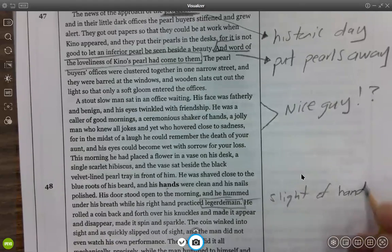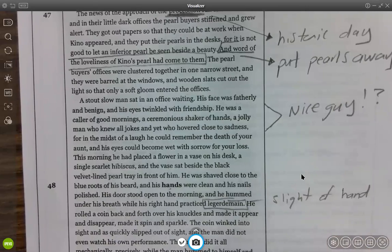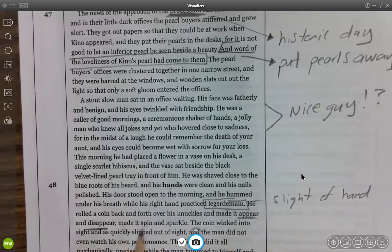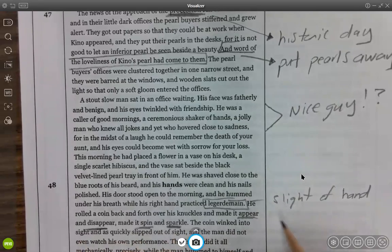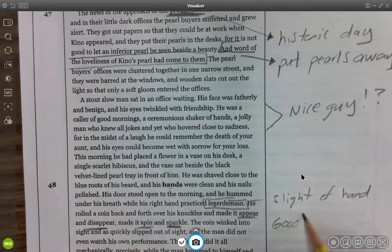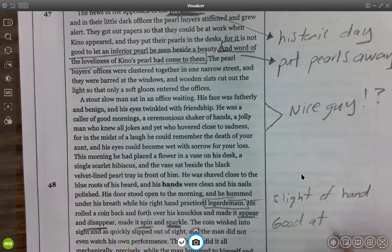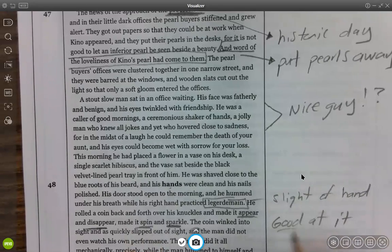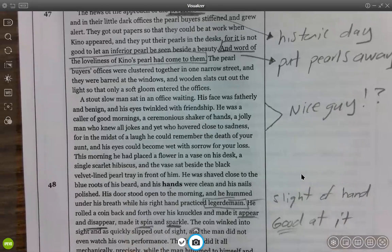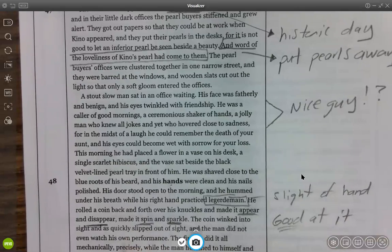And if I remember correctly, he's good at it, better than we all were trying to practice that coin trick. He rolled the coin back and forth over his knuckles and made it appear and disappear and spin and sparkle. You know, these words right here, appear, disappear, spin, sparkle. It just, you know, he's good at it. It's not moving at a snail's pace across his knuckles as you try to fit it in the crevices between your fingers. The coin winked into sight as it quickly slipped out of sight, and the man did not even watch his own performance.